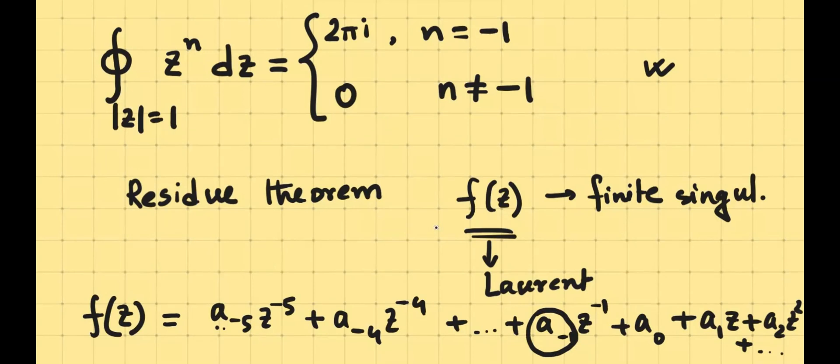And if there are singularities within the region you're integrating, or within the contour you're integrating, then the residues of the function becomes the most important factor in determining the result of the integration. Only in case of z to the power negative 1, you have a Laurent series with a residue, and in other cases the Laurent series does not have a residue. So therefore, it has answer only when n is equal to negative 1.